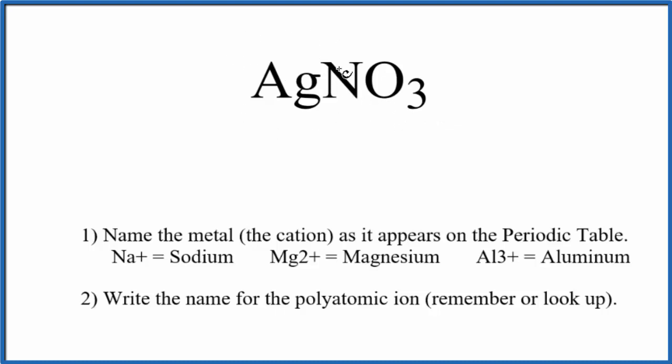So we first write the name of the metal, Ag, which is just silver. And then we write the name for the polyatomic ion, the nitrate ion. That's a good one to remember. And this is the name for AgNO3, silver nitrate.